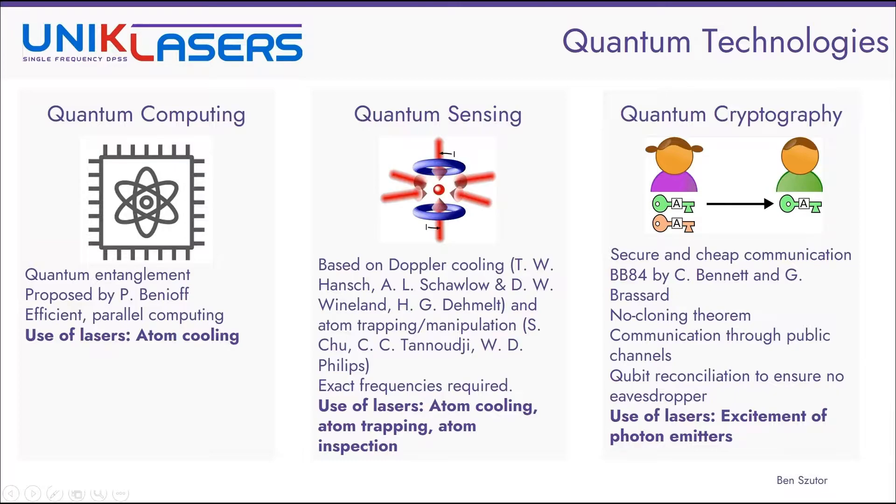Now quantum sensing is more important for us as a company. These sensors are based on Doppler cooling and atom trapping, which is basically a process of confining the atoms, keeping them very stable, in which case their frequencies can be measured. So lasers are essential for these applications, from cooling to trapping and then to inspecting these atoms.